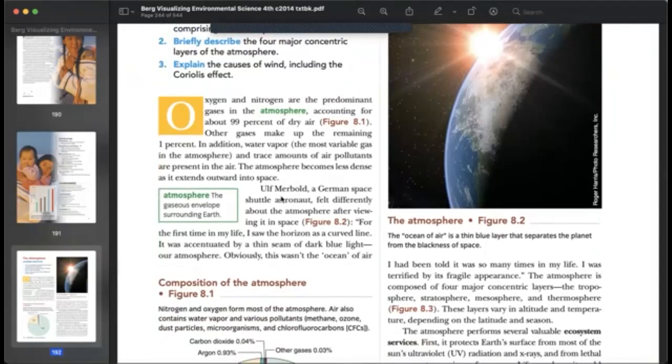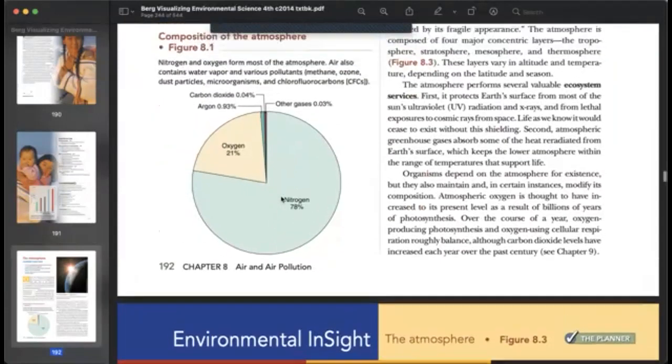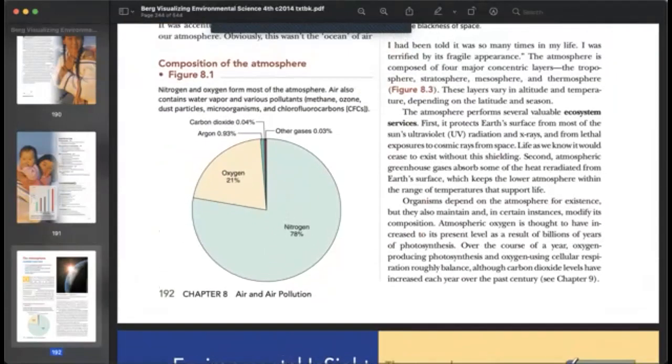But 99 percent of the atmosphere is concentrated in the lower layers. The majority of it is nitrogen.